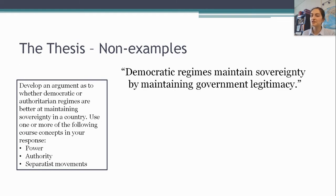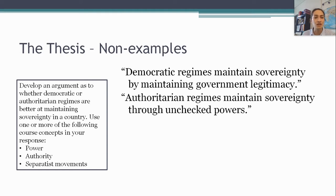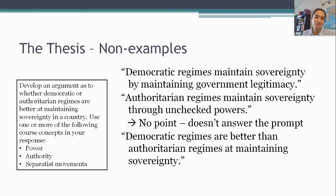Let's look at some examples that would not earn the thesis point — and I'm pulling almost all of this directly from the course and exam description. Number one, I might write: 'Democratic regimes maintain sovereignty by maintaining government legitimacy.' Or similarly: 'Authoritarian regimes maintain sovereignty through using their unchecked powers.' Neither of those would get the point, because they don't actually answer the question. Even the one that engages with a course concept doesn't take a position on which one is better. So you have to take a side and explicitly address that prompt.